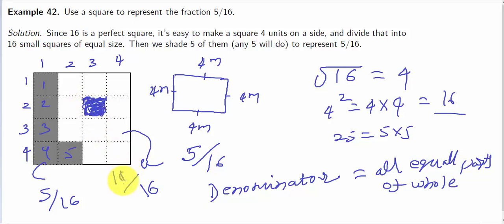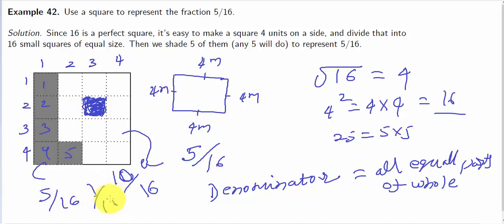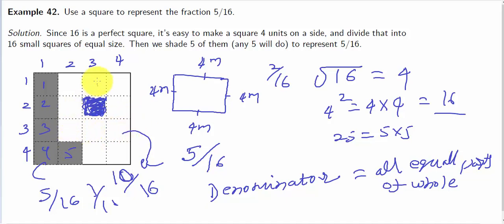The fraction for each part is 1 by 16. One red part is 2 by 16 and one green part is 3 by 16. So the parts are made by the whole. OK guys, thank you so much, see you later.